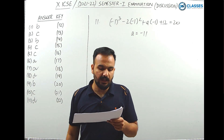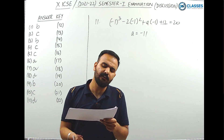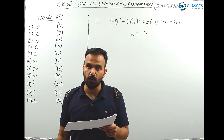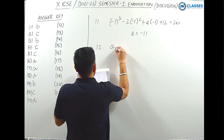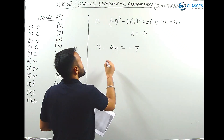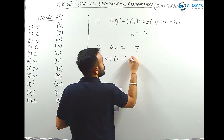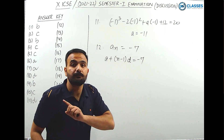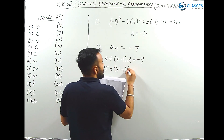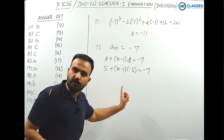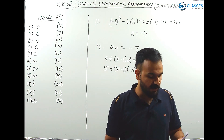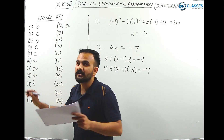Question 12: in an AP, if the first term is 5, common difference is -3, and the nth term is -7, find n. Using the formula: nth term = a + (n-1)d, so -7 = 5 + (n-1)(-3). Solving this equation in terms of n gives n = 5. Option A is the correct answer.